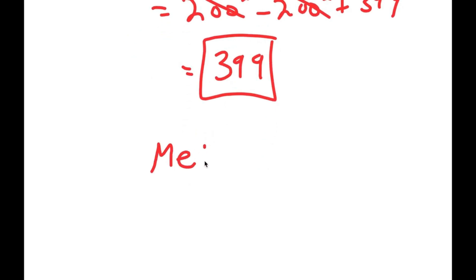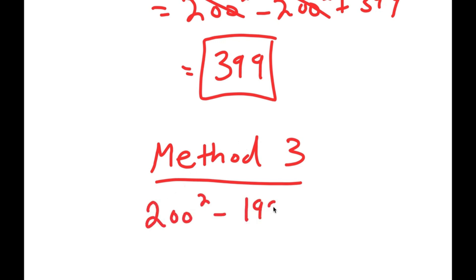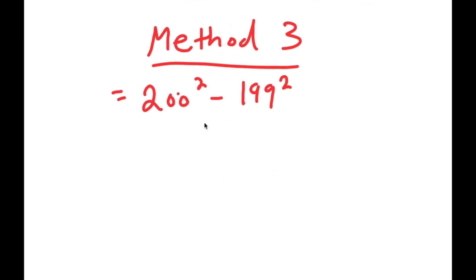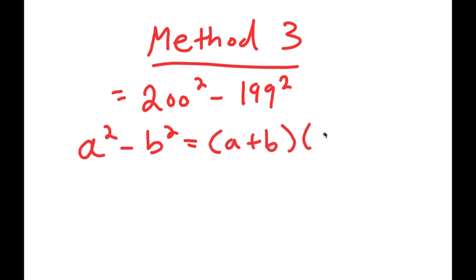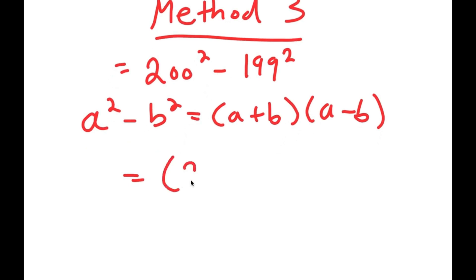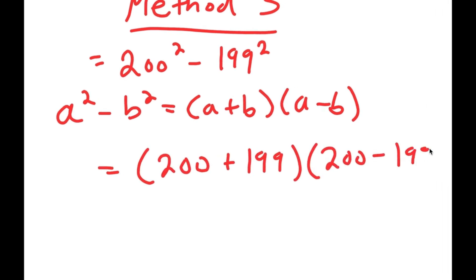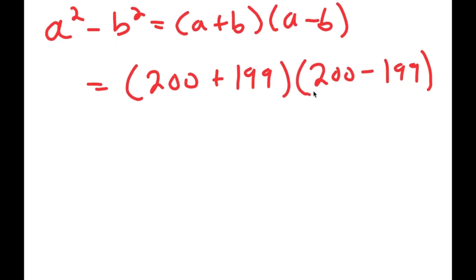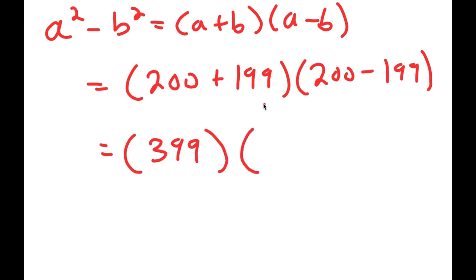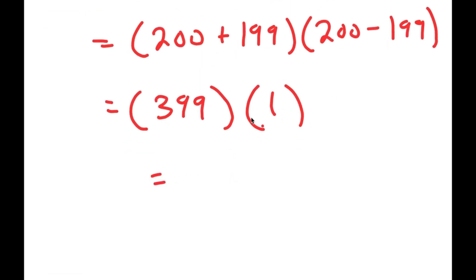Finally, for my third and final method, I have 200 squared minus 199 squared, and this time I'm not going to change these two. I'm just going to directly use the difference of squares property: a squared minus b squared equals a plus b times a minus b. So this turns into 200 plus 199 times 200 minus 199. Now 200 plus 199 equals 399, and 200 minus 199 is simply 1. So I get 399 times 1, and anything times 1 is itself, so the result is 399.